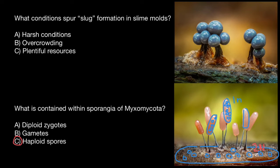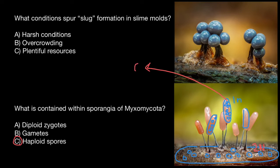Now we can return to the first question: what conditions spur slug formation in slime molds? Instead of slug, we can also say amoeba. So let's take one spore — he's a spore.